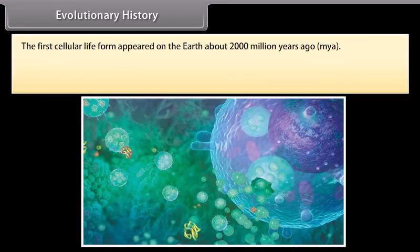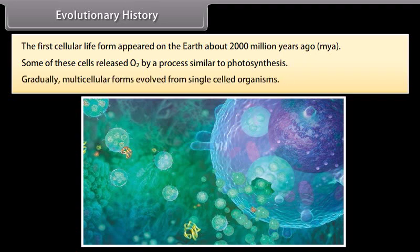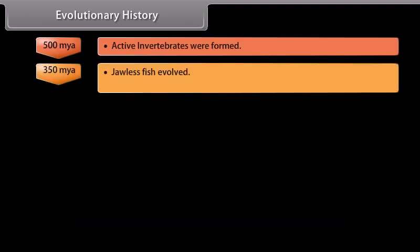The first cellular life form appeared on the earth about 2,000 million years ago. Some of these cells released oxygen by a process similar to photosynthesis. Gradually, multicellular forms evolved from single-celled organisms, and further evolution can be traced from there.